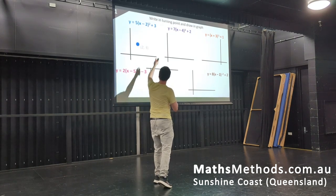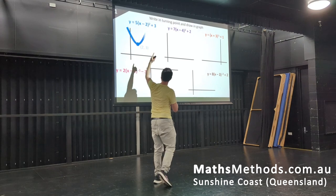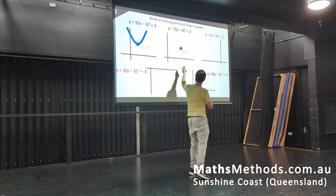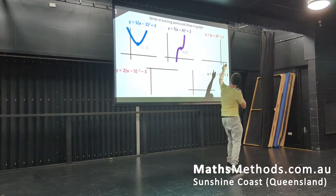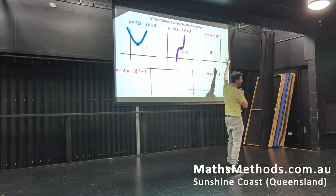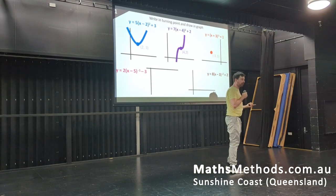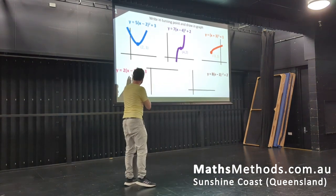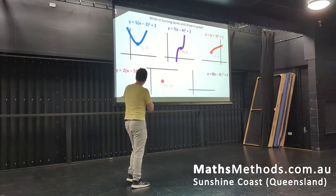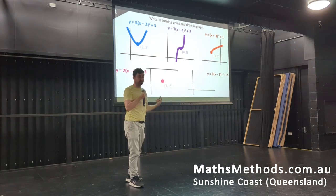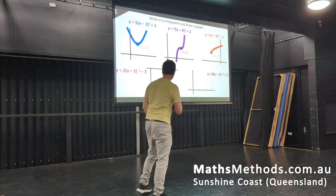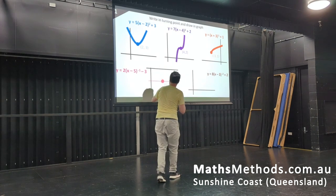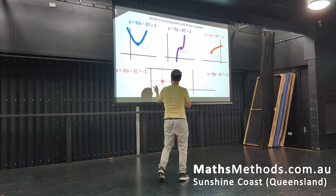The whole idea is you write in the turning point and draw the graph. 2, 3 — power is 2, so it's a parabola, chuck it in. 4, 2 — power is 3, so it's a cubic, draw that in. Negative 3, 1 — to the power of half means it's going to be the square root function, so we chuck that one in. Here we have 5, negative 3 — because it's to the power of negative 1, we know it's a hyperbola, so we chuck in a couple of asymptotes and then draw in the graph.